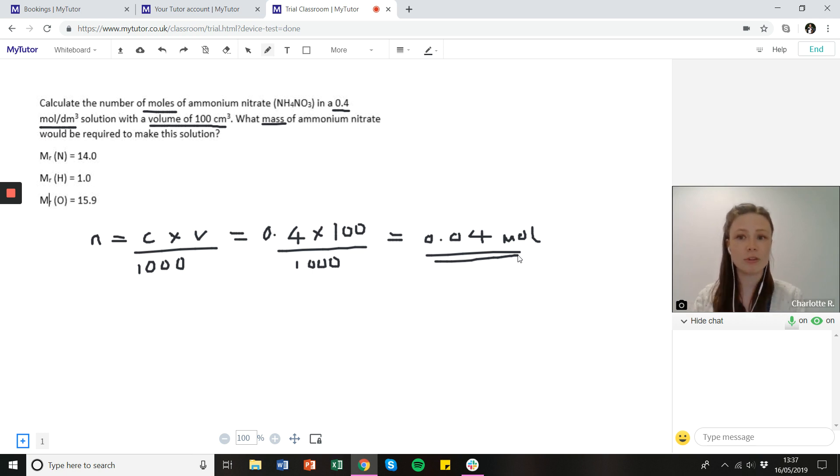And what we can say is the number of moles that we have at the start in solid form is going to be the same as the number of moles we have at the end in our solution. So this number of moles that we've just calculated in solution is also the same as the number of moles that we had at the start when we were mixing our solid with our water.